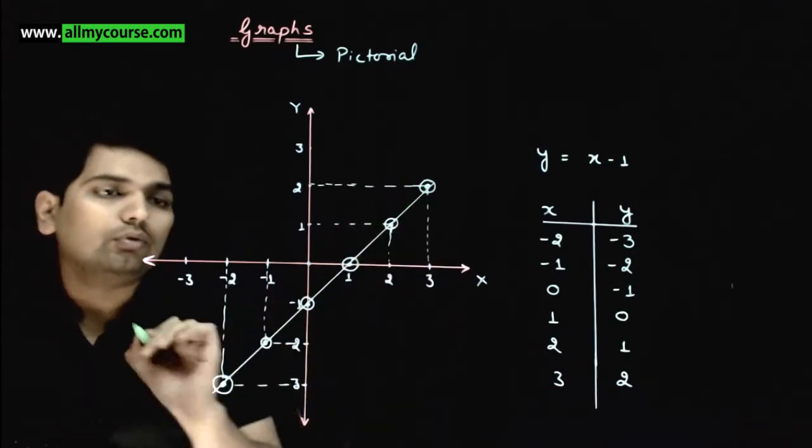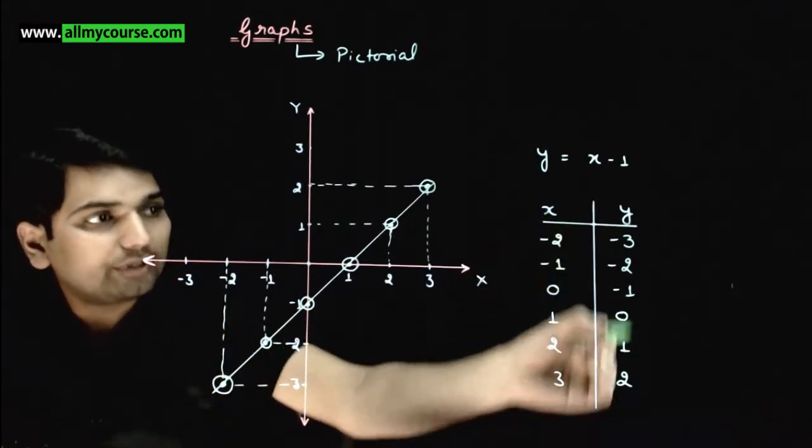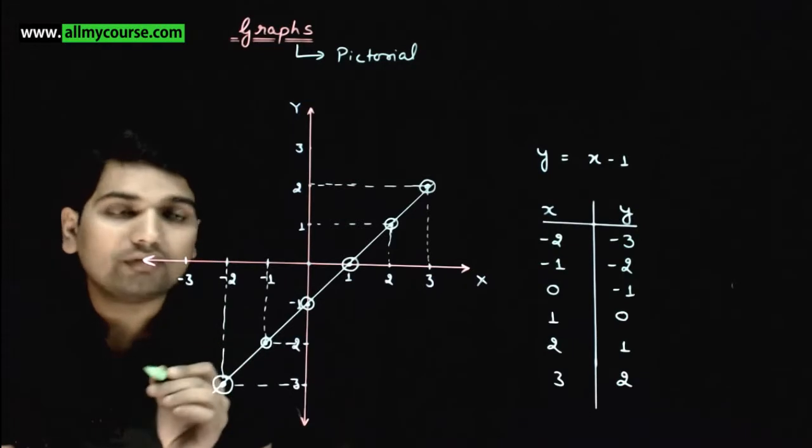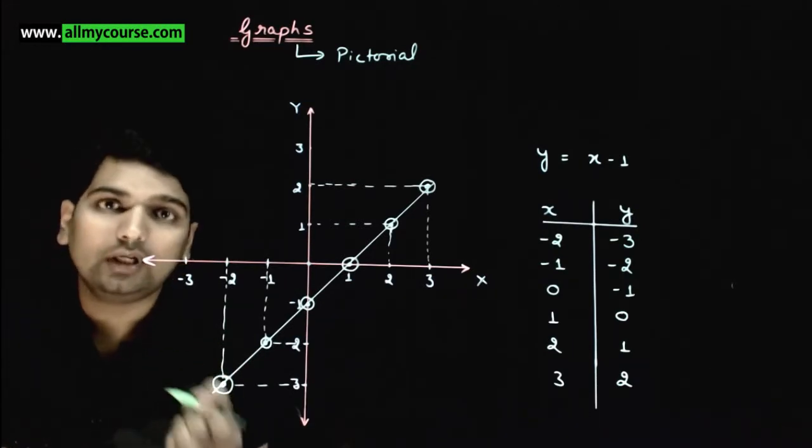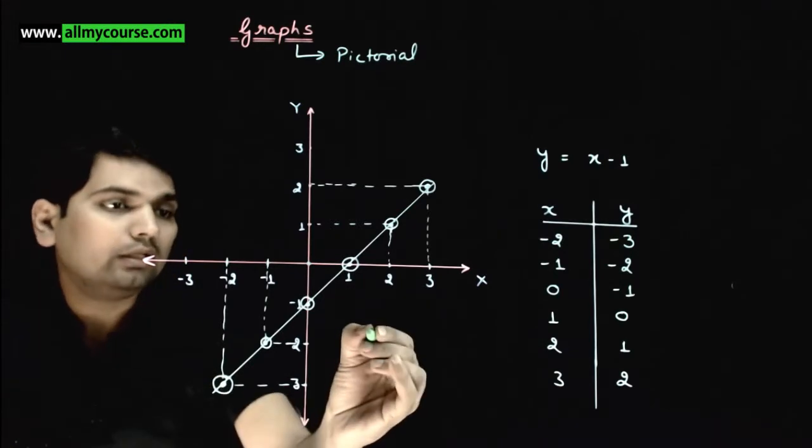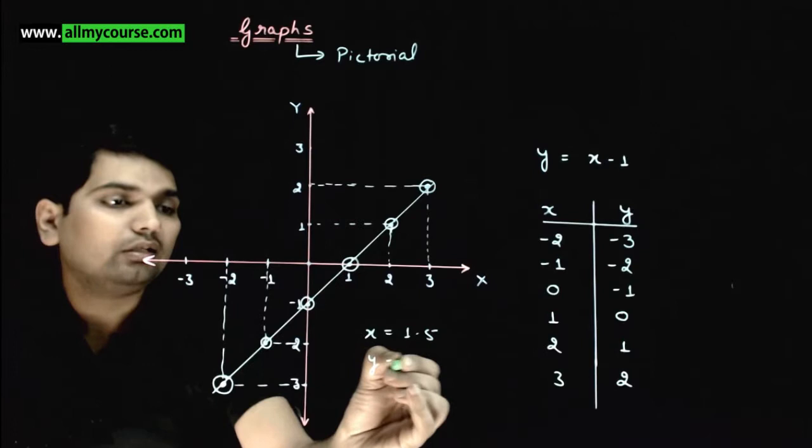If we look at this graph carefully, we plotted this graph using 6 data points. But then we can extract a lot of extra information from this graph. For instance, let's say you want to find out when x is equal to 1.5, what will y be?